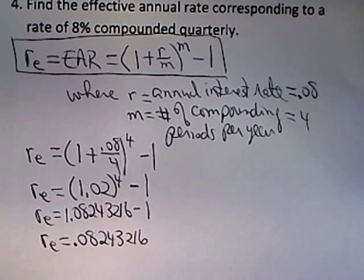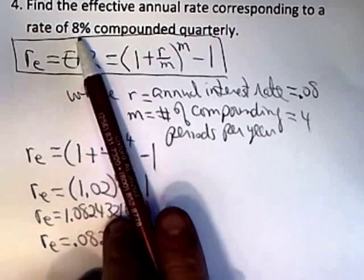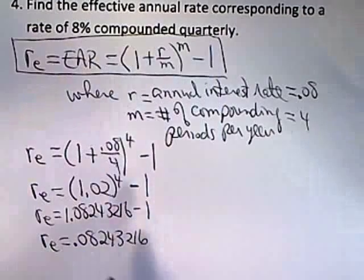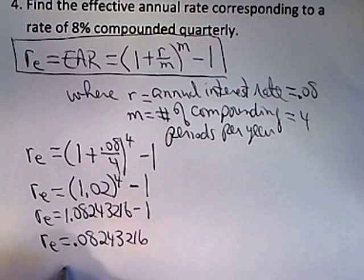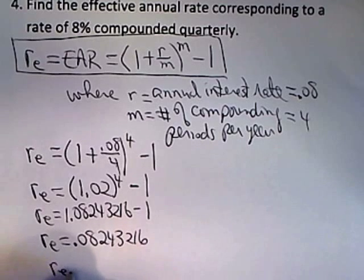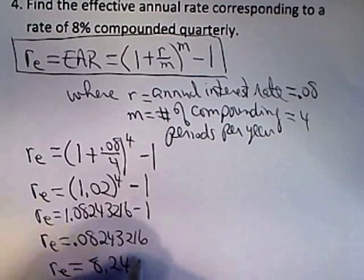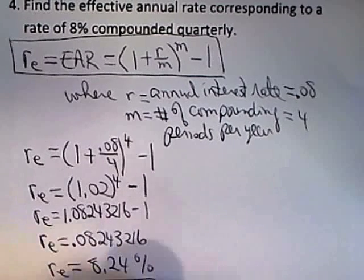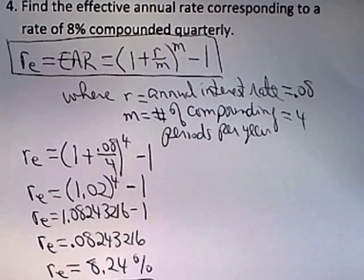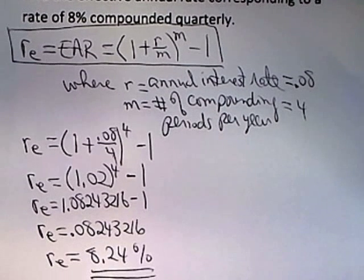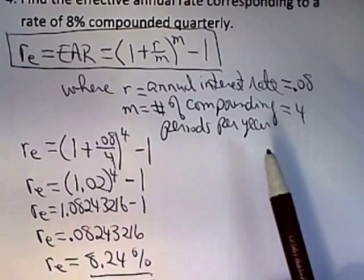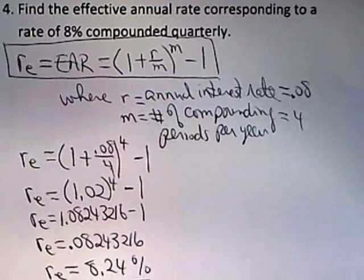Now, of course, in this problem, I really didn't ask you to leave it in a particular way, but it was given to you as a percent. The regular rate was 8% compounded quarterly, so you're probably going to change it back to a percent. And I also didn't tell you how to round it, but let's just assume that we were asked to round it, write it as a percent, and round it to the nearest hundredth. And if that were, indeed, the way we were asked to leave the answer, the answer would be 8.24%. So 8.24% is the effective annual rate corresponding to a rate of 8% compounded quarterly.